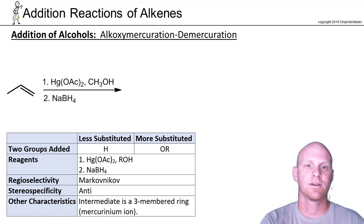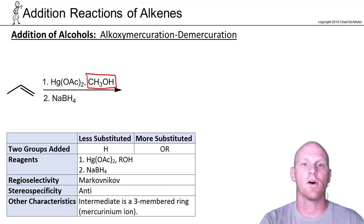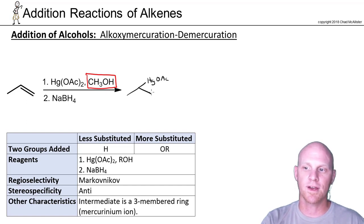The key difference here is in step one with mercuric acetate - instead of including water, you can pick the alcohol of your choice. This is still going to go through a three-membered ring with mercury as your intermediate, so it's still a mercurinium ion.